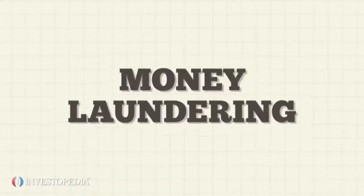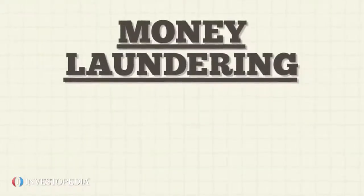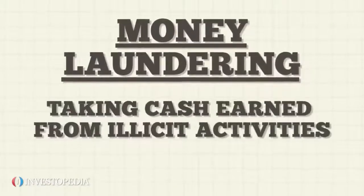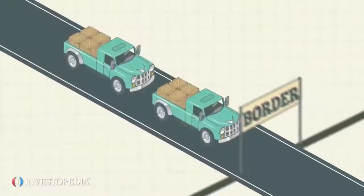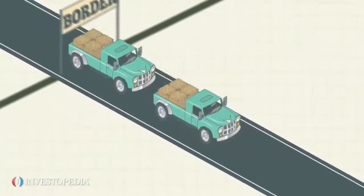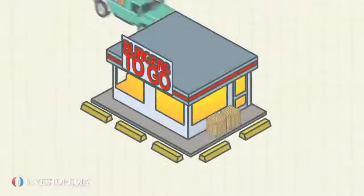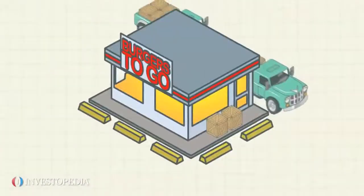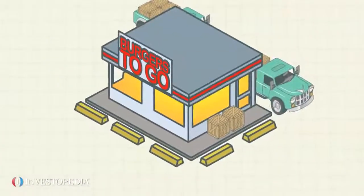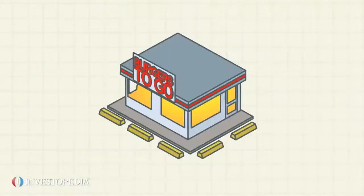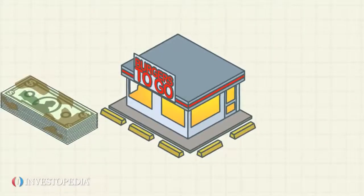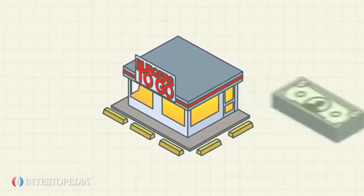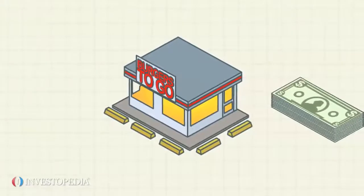Money laundering is the process of taking cash earned from illicit activities such as drug trafficking and making the cash appear to be earnings from legal business activity. The money from the illicit activity is considered dirty, and the process launders the money to make it look clean.